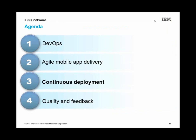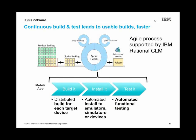Let's move on to topic three, which is continuous deployment. This is really about a very important practice that we see helping people deliver mobile applications faster. The basic concept is you want to enact a continuous process of building and testing, because what that gives you is very usable builds faster. Every time you do a sprint, you're going to have an output. During the sprint, you'll have lots of builds that you want to test. Every time you have a continuous integration build, you'd like to take that build, distribute it onto the device targets you're targeting and the middleware, install it into emulators or devices you want to test against, and then perform automated and manual testing against it — extending continuous integration into continuous testing.